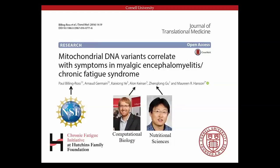We published this year a paper about mitochondrial DNA variation, and it's that paper I'm going to start with to discuss. This work was funded largely by the Hutchins Family Foundation and the Chronic Fatigue Initiative. It also received some support from Cornell University internal funds, and the lead author received support from NSF for a graduate fellowship. This work was done not only in my lab, but also in the labs of Alan Kynan in computational biology at Cornell, and Zheng Longgu, who's in nutritional sciences at Cornell.